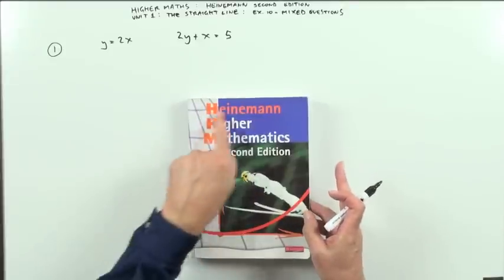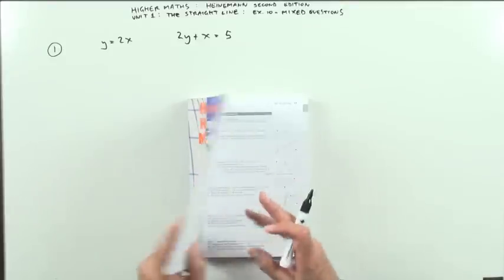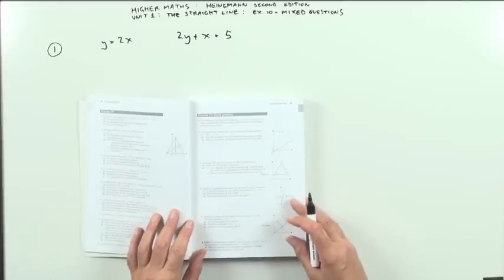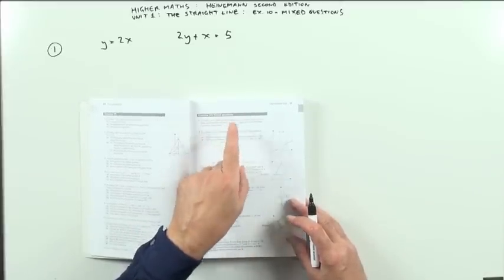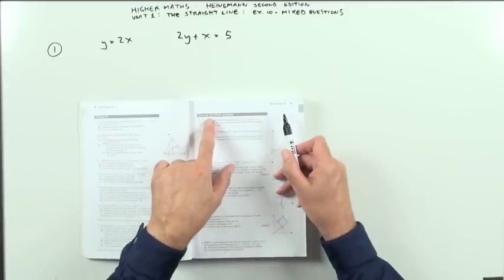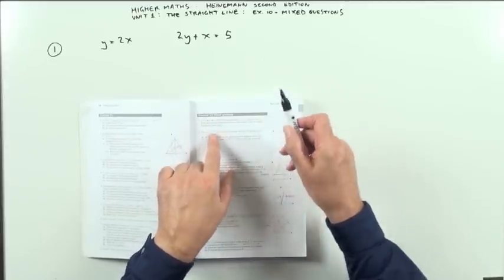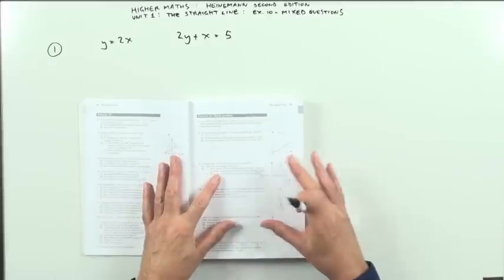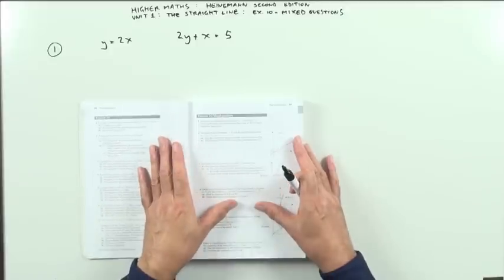So if you're doing higher maths using this book, the Einmann book, second edition, I think the exercise is the same as the first one, then I'm going to go through the mixed questions at the end of each of the chapters. So at the end of the straight line you've got exercise 1-0. It looks like 10 but it's actually 1-0. I'll just go through these various questions. However I'm not going to pick up the questions. You'd be using your own book for this.